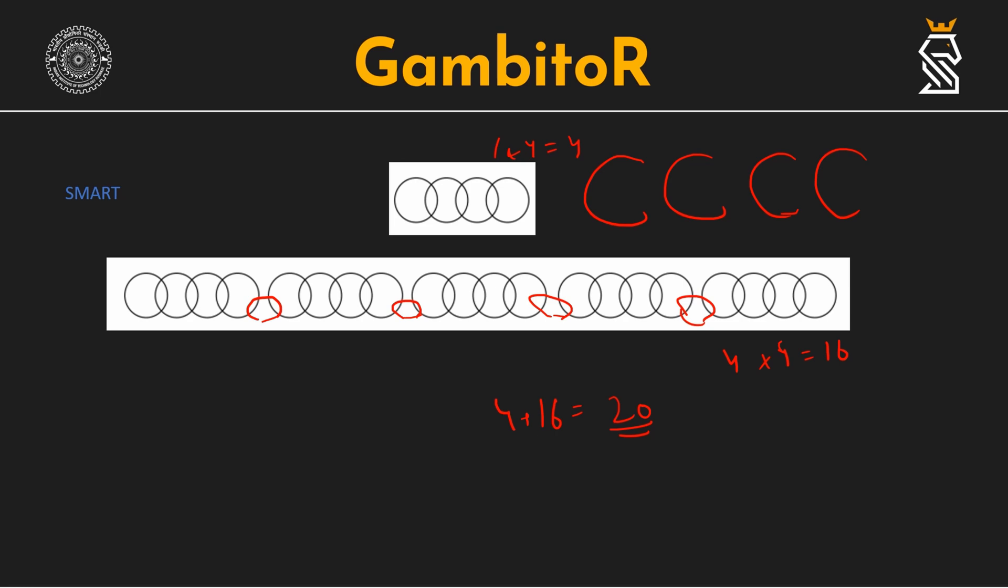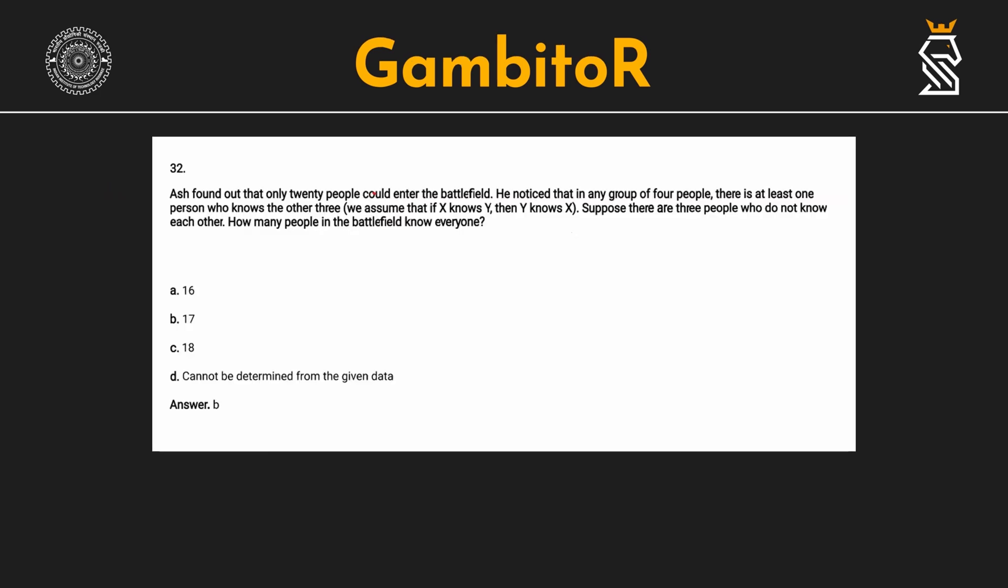Moving on to the next question, question number 32. We are given that there are 20 people P1, P2 to P20. For each group of 4 people out of this 20 people given, at least one of those 4 knows the other 3 persons. Hence, if we take any group like P5, P8, P12, P15, at least one of them knows the other 3.